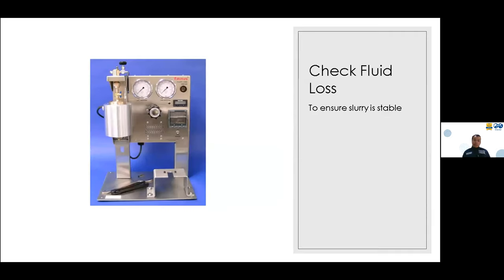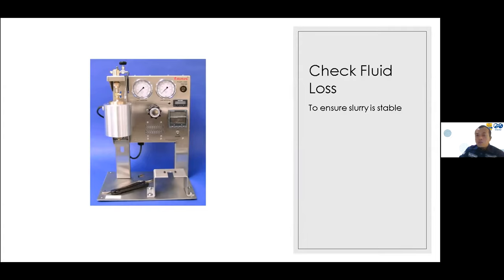The fluid loss test uses a fluid loss cell with a permeable screen of about 300 mesh at the bottom. The slurry is placed in the chamber and we measure how much water is lost through the screen. If a large volume is lost, the slurry will not be stable when placed in the wellbore, since the wellbore has permeability that allows water to escape from the cement.